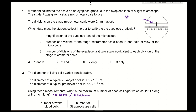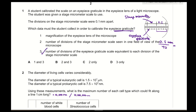Here we can see the stage micrometer. The ruler divided into 100 divisions at the bottom is the eyepiece graticule. Each division on the stage micrometer is 0.1 millimeters apart. To calibrate the eyepiece graticule, we divide 0.1 millimeters — or convert it to micrometers — by the number of units covering the eyepiece graticule; in this case, it's 40. This gives you the size of each unit on the eyepiece graticule. Therefore, only step three is the correct answer — the answer is D.